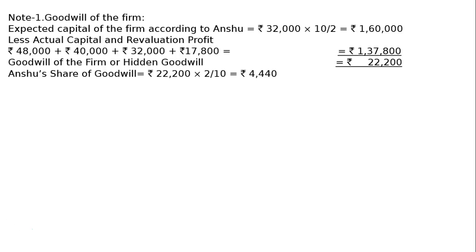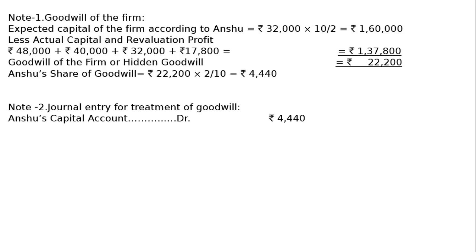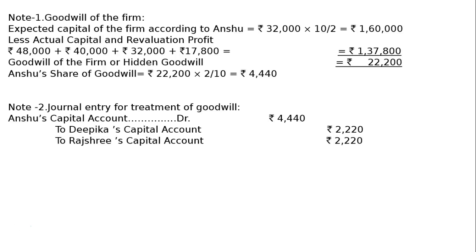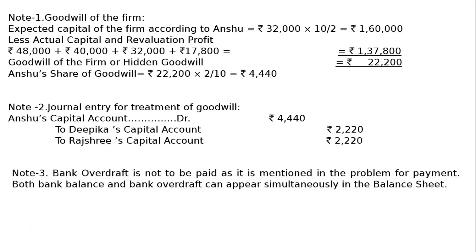Anshu's share of goodwill: Rs. 22,200 for the firm multiplied by Anshu's profit share, that is 2 by 10, equals Rs. 4,440. Journal entry for treatment of goodwill: Anshu is not paying any cash for goodwill. It is Anshu's capital account debited Rs. 4,440, to Deepika's capital account Rs. 2,220 and to Rajshri's capital account Rs. 2,220, in sacrificing ratio.